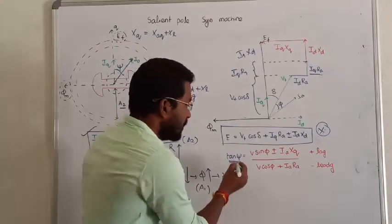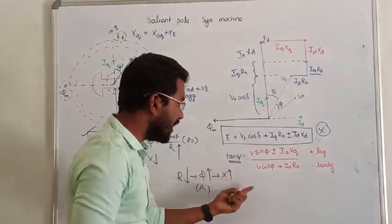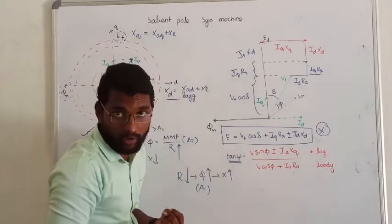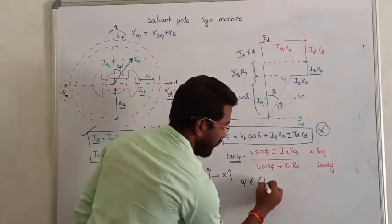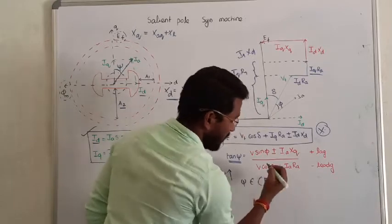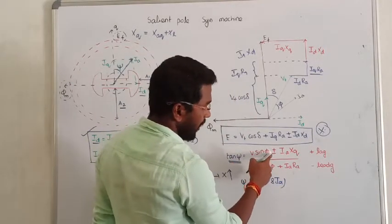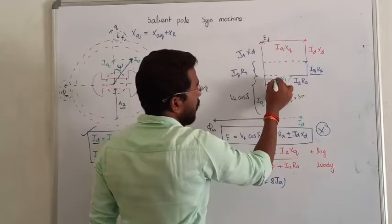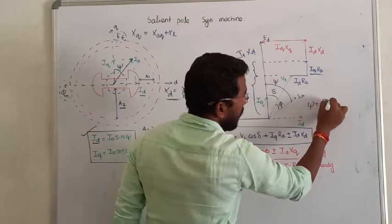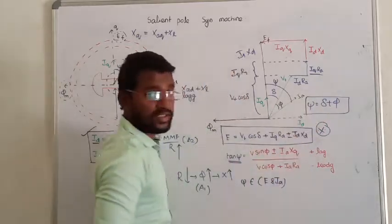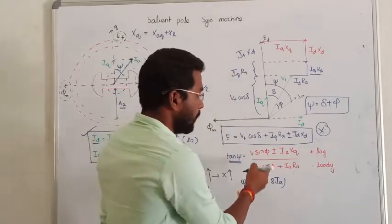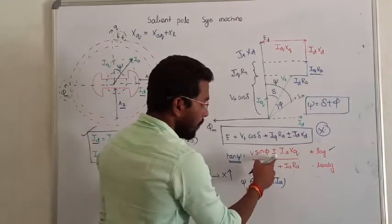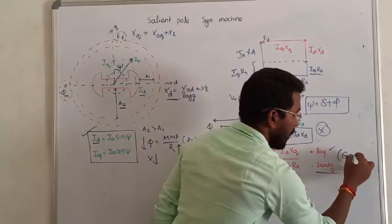In the same way, we can also calculate the value of tan(psi). Here, tan(psi) denotes the internal power factor, where psi is the phase difference between internal voltage and armature current, and psi equals delta plus phi. So tan(psi) equals [V·sin(phi) ± Ia·Xq] divided by [V·cos(phi) + Ia·Ra], where plus is for lagging power factor and minus is for leading power factor. This is for generator or alternator.